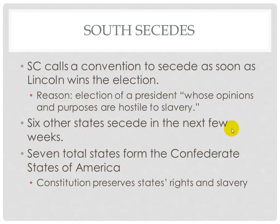The resulting Confederate constitution was surprisingly similar to that of the United States. Most differences merely spelled out traditional Southern interpretations of the federal constitution. The central government was denied the authority to impose protective tariffs — the issue that caused the nullification crisis — subsidize internal improvements, or interfere with slavery in the states, and was required to pass laws protecting slavery in the territories. At the convention, they chose their provisional president: Jefferson Davis of Mississippi.